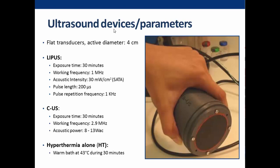This is the ultrasound device used in this study. The probe is a flat transducer with a four-centimeter active diameter. We investigated several exposure conditions. The first was low intensity pulsed ultrasound to create only mechanical stress in the cells: exposure time 30 minutes, working frequency 1 MHz, acoustic intensity 30 mW/cm² SATA, pulse length 200 microseconds, and pulse repetition frequency 1 kHz.